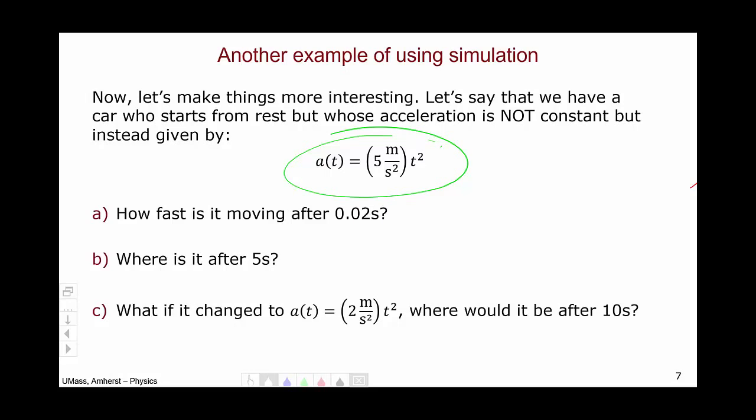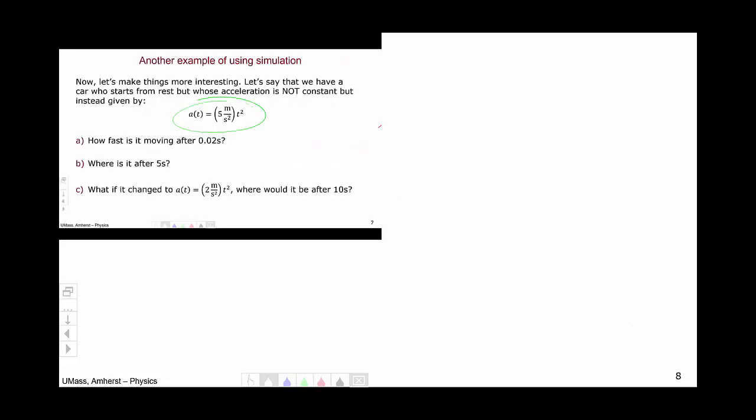So let's get started by going through the problem. How fast is it moving after 0.02 seconds? Well, as before, we're going to set up a table of time, position, velocity, and acceleration. What's our first step? T equals zero.